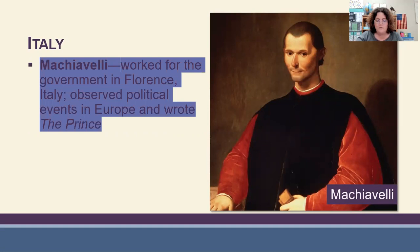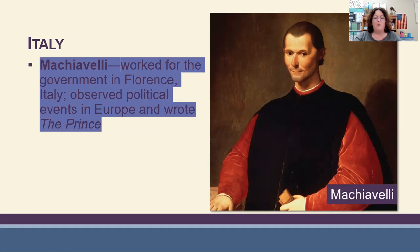Machiavelli taught that those who live by classical and biblical virtues would not be able to gain or keep power. If a virtue helped the ruler gain power, he wrote that the ruler should use it; if not, the ruler should disregard it. In this way Machiavelli demonstrated the Renaissance trend of freeing people from religious tradition, allowing man to be the measure of all things — essentially teaching that the ends justify the means. This obviously goes against what Scripture teaches.